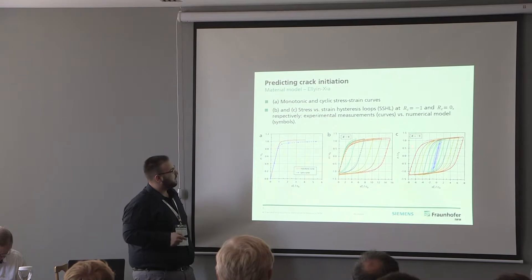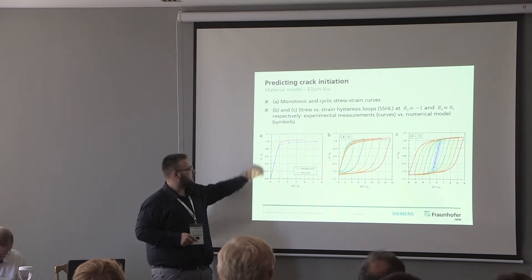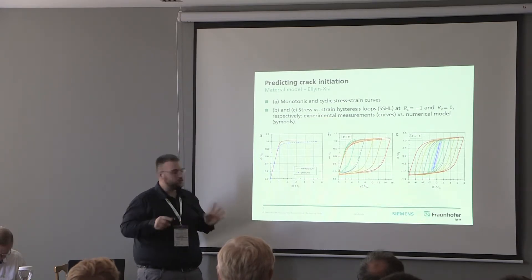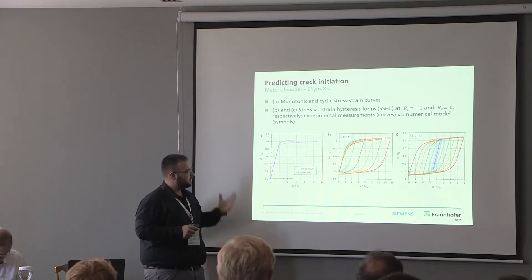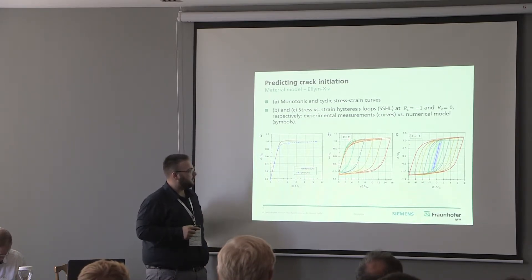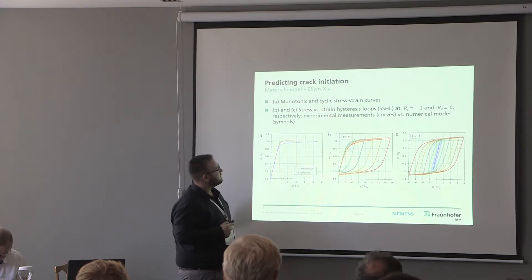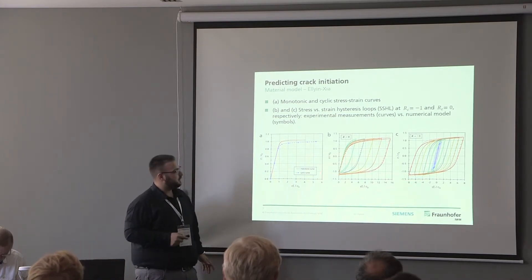The material model is calibrated. You can see here the cyclic stress-strain curve and the monotonic stress-strain curve in red, and a stress-strain hysteresis loop calibrated at a strain ratio of minus one and validated for a strain ratio of zero. The symbols represent the simulation and the curves represent the experiments — the calibration is very good.